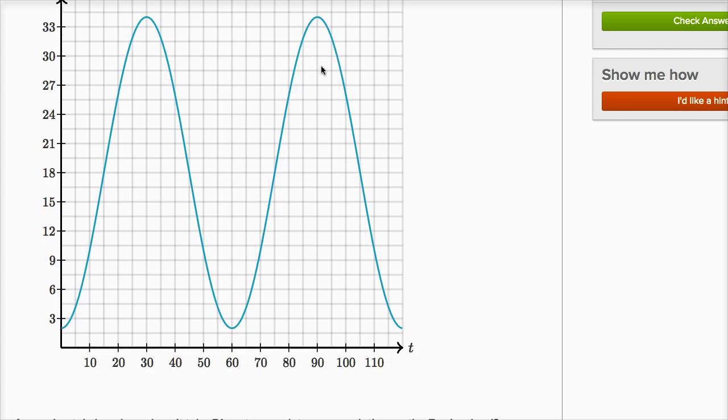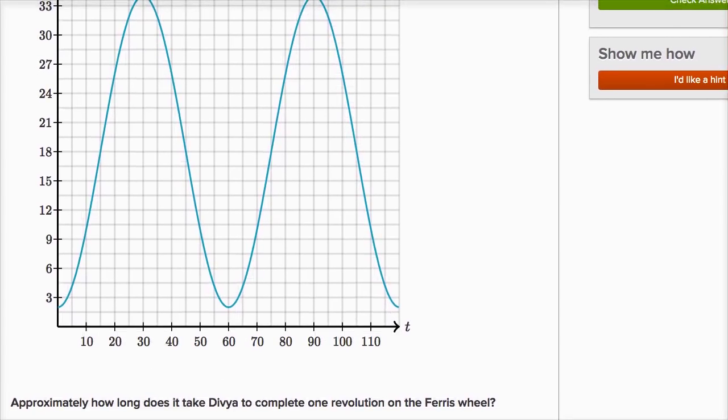So let's read the question. The question asks us, approximately how long does it take Divya to complete one revolution on the Ferris wheel? All right, so this is interesting. So this is when she's at the bottom of the Ferris wheel. So then she gets to the top of the Ferris wheel, and then she keeps rotating until she gets back to the bottom of the Ferris wheel again.